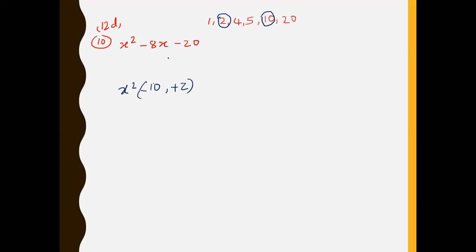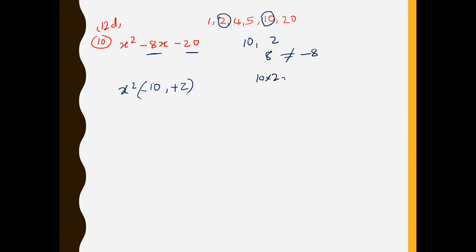Let me explain in more detail. Whenever you want to factor out something and the addition is negative and the multiplication is also negative, one of the values must be negative. But if the multiplication is positive, then both values are positive or both are negative. For example, 10 minus 2 is 8, not negative 8, and 10 times 2 equals 20, not negative 20.